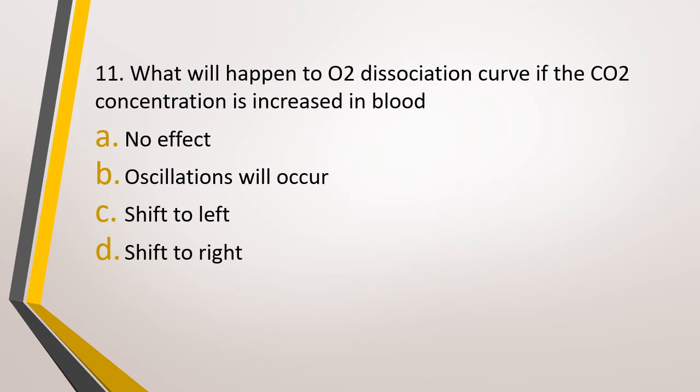Question number 11. What will happen to oxygen dissociation curve if the carbon dioxide concentration is increased in blood? Option A: No effect. Option B: Oscillation will occur. Option C: Shift to left. Option D: Shift to right. The correct answer is option D, the curve will shift to right.